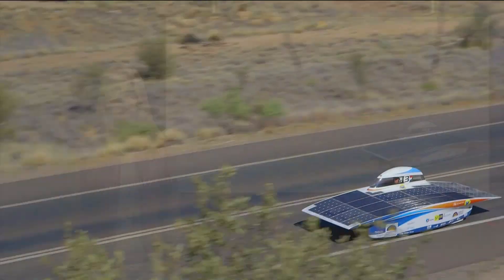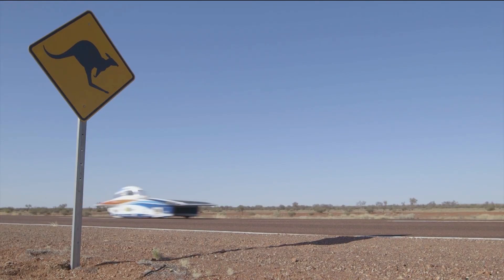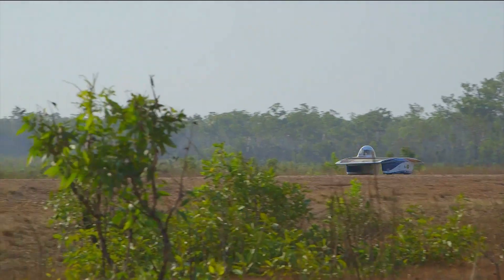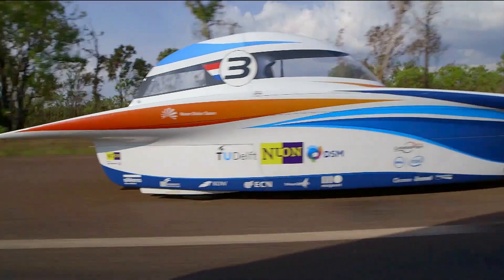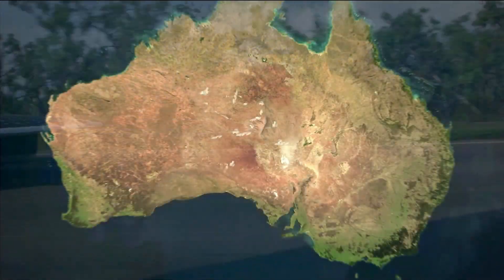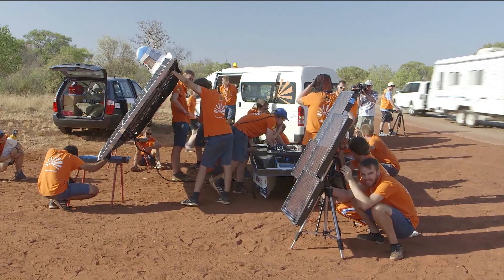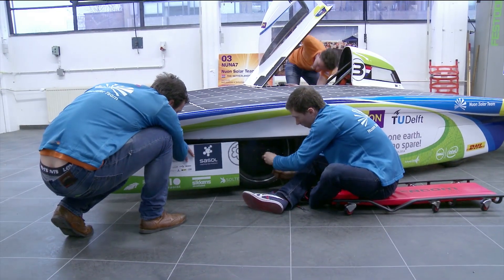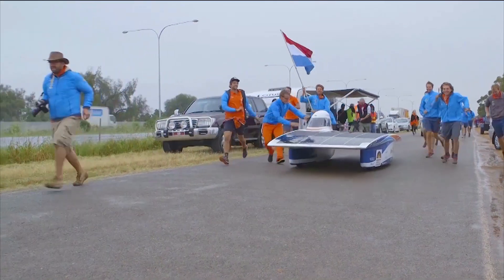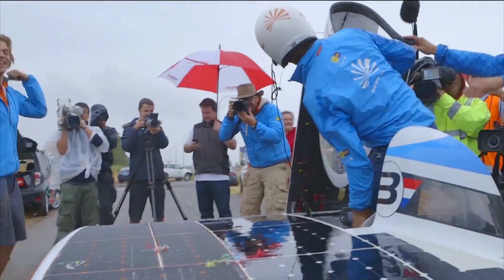The World Solar Challenge, a race for cars using only solar power to cross Australia. Racing 3,000 kilometers from Darwin to Adelaide, students of the Delft University of Technology built the NUNA 7 and won this world championship of solar cars.